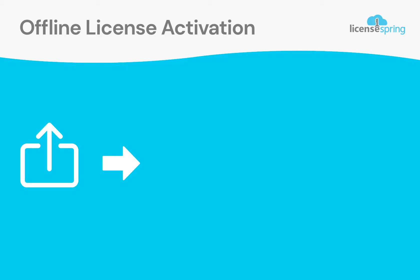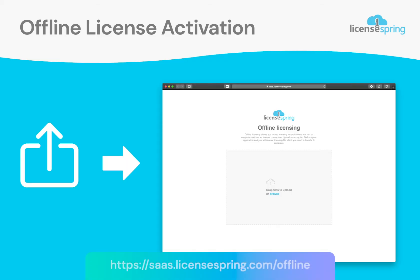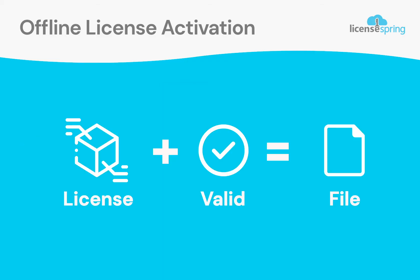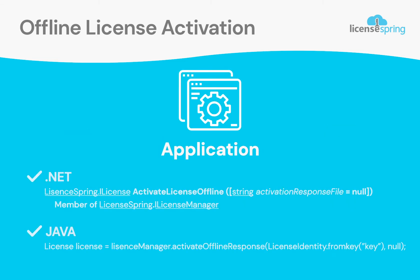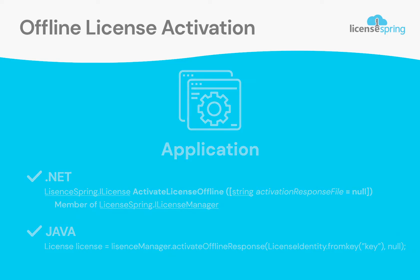Next, upload the request file to LicenseSpring's offline portal. If the license is valid, the offline portal will return the license file. In the application, run the equivalent activate offline method, which will also be in the license manager, by specifying the path where the license file is found.